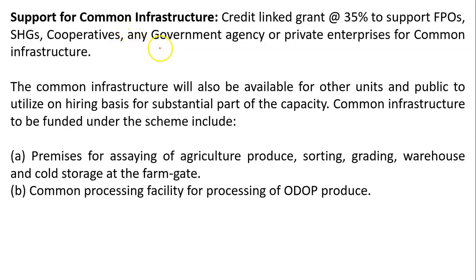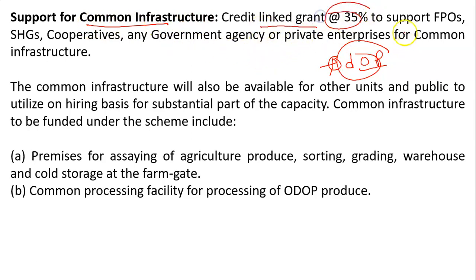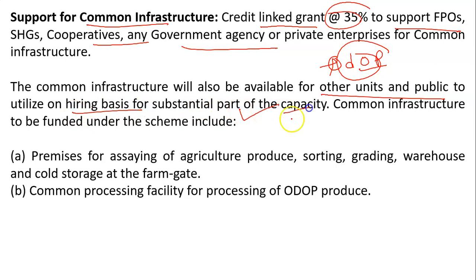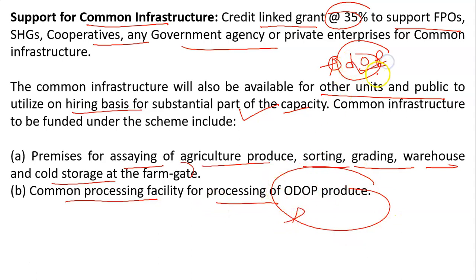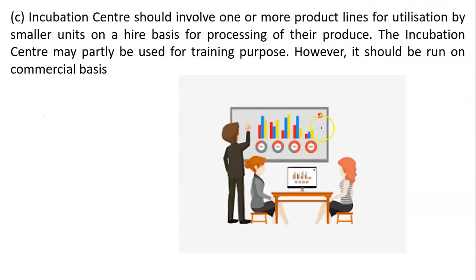This scheme works on the One District One Product approach, to reap the benefits of scale in terms of procurement of inputs, availing common services, and marketing of products. The ODOP framework provides for value chain development and alignment of support infrastructure. There may be more than one cluster of an ODOP product. For common infrastructure, a credit-linked grant of 35% is given to FPOs, self-help groups, cooperatives, or any government agency, and this infrastructure is available for other units on a hiring basis. Common infrastructure includes assaying, sorting, grading, warehousing, cold storage, and common processing facilities for ODOP products.